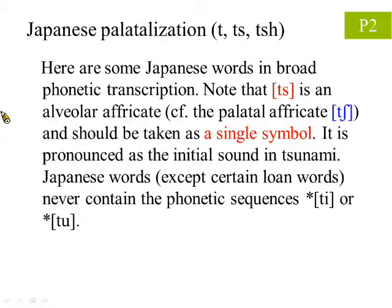Here are a few things we should take note of. Firstly, the Japanese [ts] is an alveolar affricate, which can be compared with the palatal affricate [ch]. Also, the bracketed [ts] should be taken as a single symbol. It is pronounced as the initial sound of the word 'tsunami'.